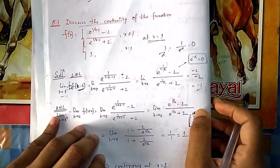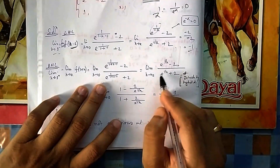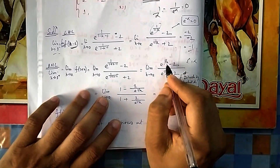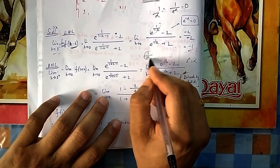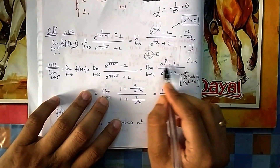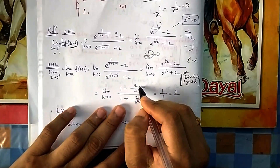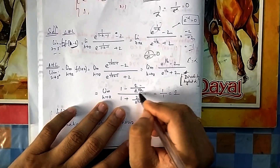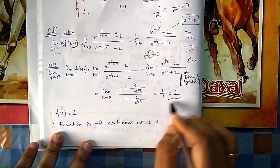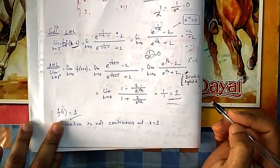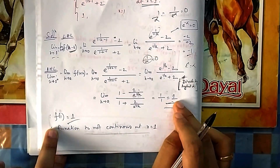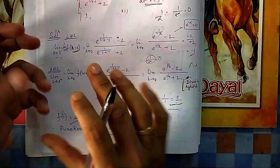For the RHL (1 + h), the exponent goes to +∞, making e^∞ = ∞, giving ∞/∞ — indeterminate. Divide numerator and denominator by e^(1/h): the numerator becomes finite and denominator's dominant term gives 1. So RHL = 1. Since LHL ≠ RHL but RHL = f(1) = 1, the function is right-continuous at x = 1 but not overall continuous.